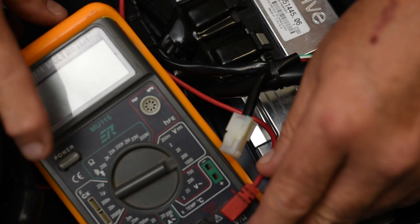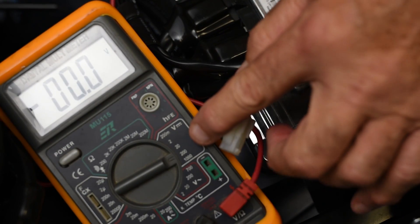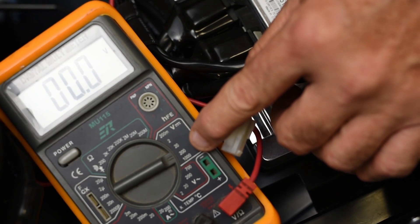Now we're going to turn the test meter on, and we want to set it to the 200-volt DC scale.